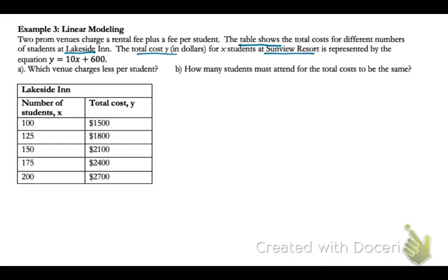So which venue charges less per student? Looking at what we've got, we know a lot of information for Sunview. We've got the equation. We know that x is students and y is cost, and our slope will be that rate of change, so cost per student. So at a glance we can tell that Sunview charges $10 per student.